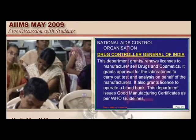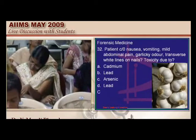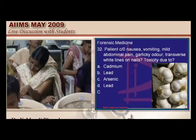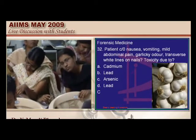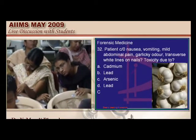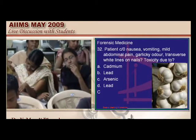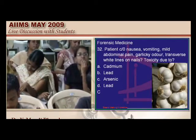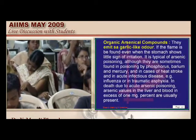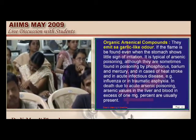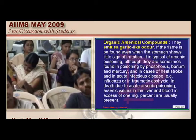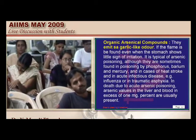Nausea, vomiting, abdominal pain, garlicky odor, and white lines of Mees on the nails — these are all classically seen in arsenic poisoning. This is the traditional question of the examiner.